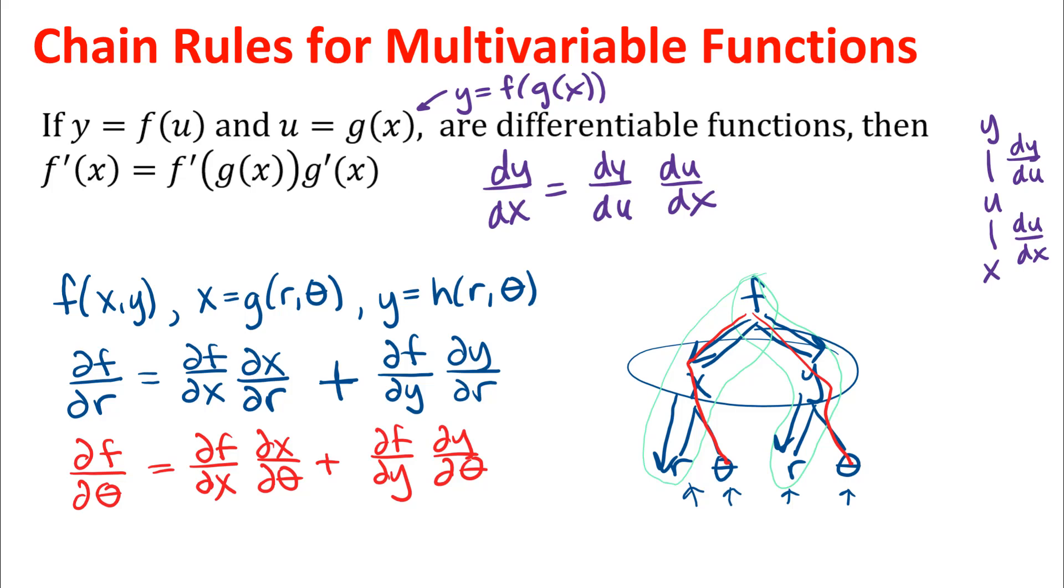The other thing about the tree diagrams is that you can really use that no matter how many variables you have and how many levels of variables you have. The idea generalizes to several variables at each level, several levels of composition there. So it's a really handy tool for just being able to write down your chain rules correctly.